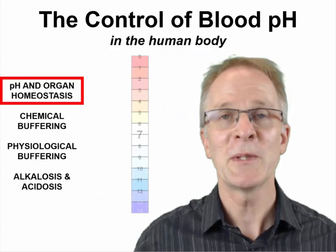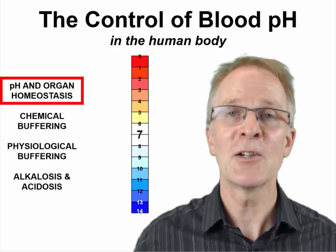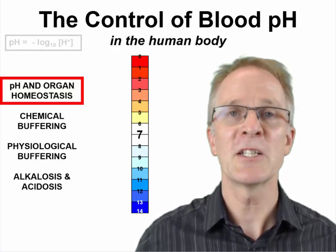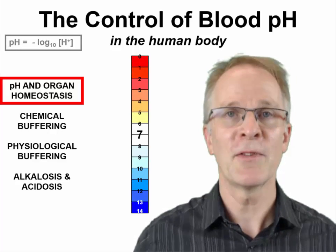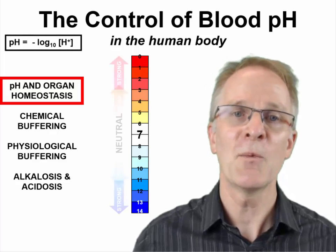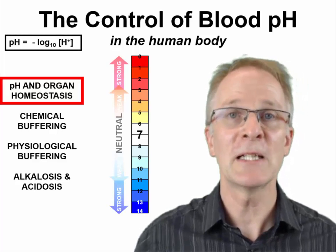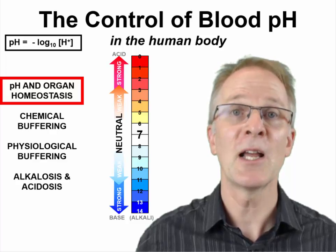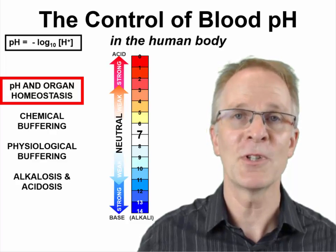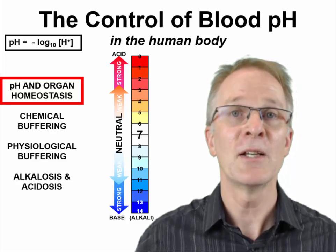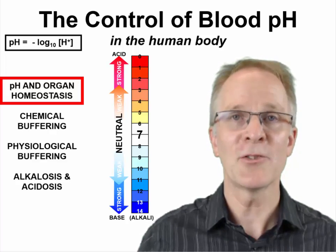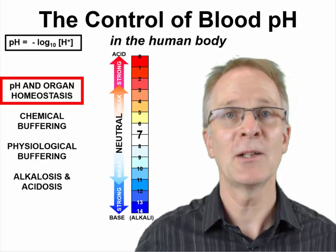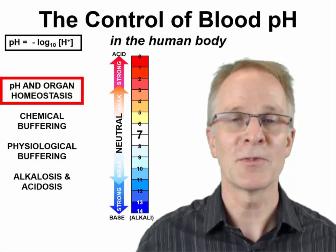Most of you will be familiar with the idea of pH and that the scale goes from 0 to 14, and that it's chemically defined as the negative log of the hydrogen ion concentration. What that means is that strong acids have a low pH and a high hydrogen ion concentration, and strong alkalis or strong bases have a high pH and a low hydrogen ion concentration.